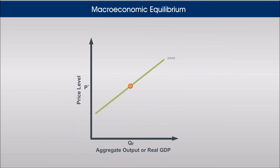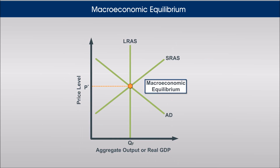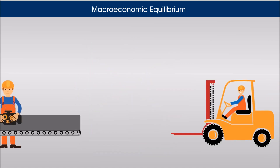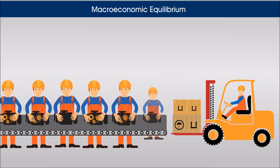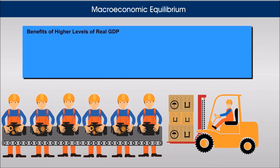Macroeconomic equilibrium occurs where the aggregate demand curve intersects the aggregate supply curve, determining the equilibrium level of price and real GDP in the economy. At any other price level, quantity demanded would not match quantity supplied. Firms usually must hire more workers to produce more output, so higher levels of real GDP are beneficial because more goods and services become available and more people are employed.